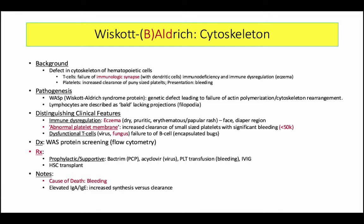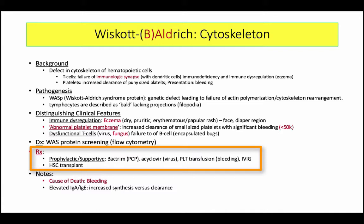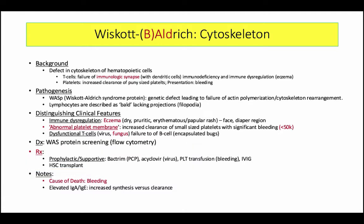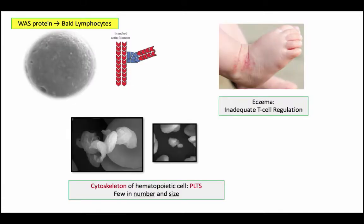Treatment underscores the immune defect: prophylactic antibiotics, antifungals, antivirals, platelet support, and IVIG. This syndrome is also reported with elevation of IgA and IgE. From a diagnostic perspective, this reflects the hypermetabolic state associated with antibody production — synthesis is greater than clearance, accounting for elevated levels. These play no role in pathogenesis. In summary: a cytoskeleton defect with bald lymphocytes that don't interact with dendritic cells, eczema especially on the face and diaper region, and platelet defects with decreased number and size causing significant bleeding complications.